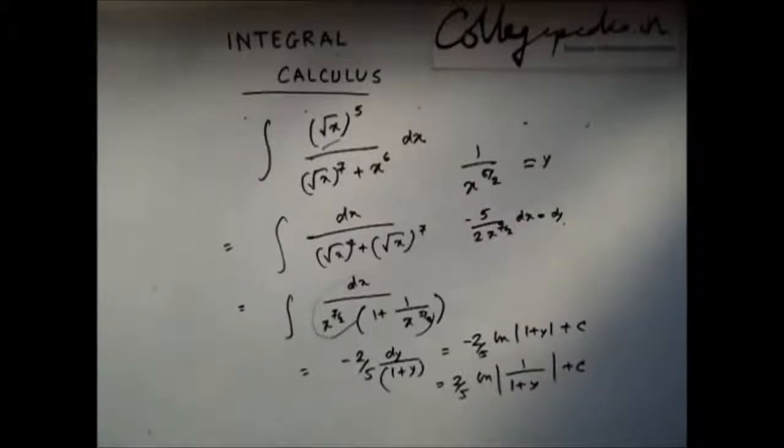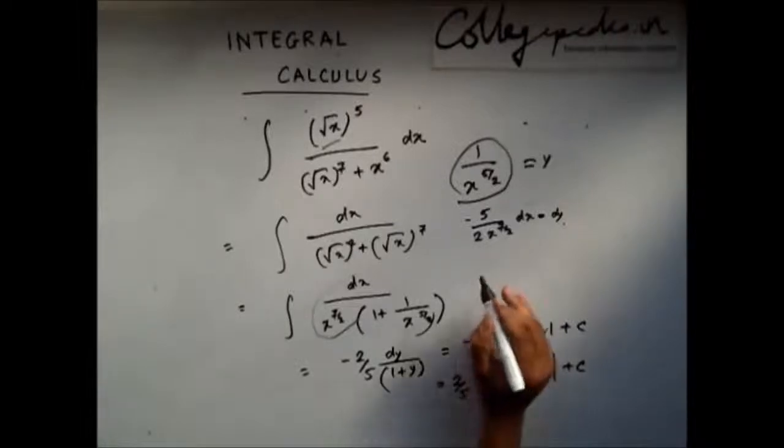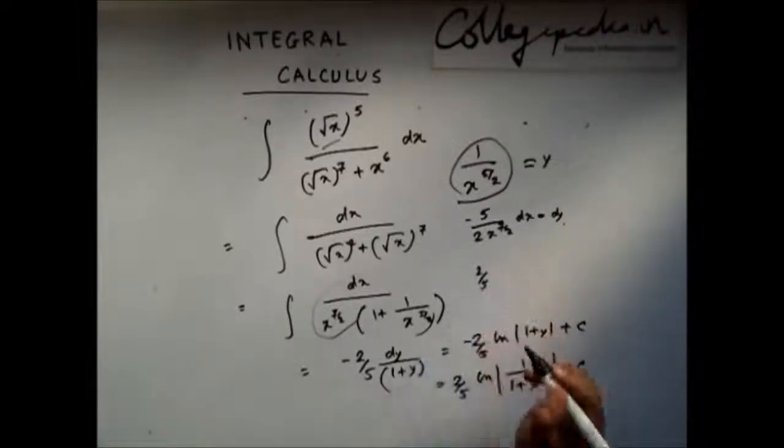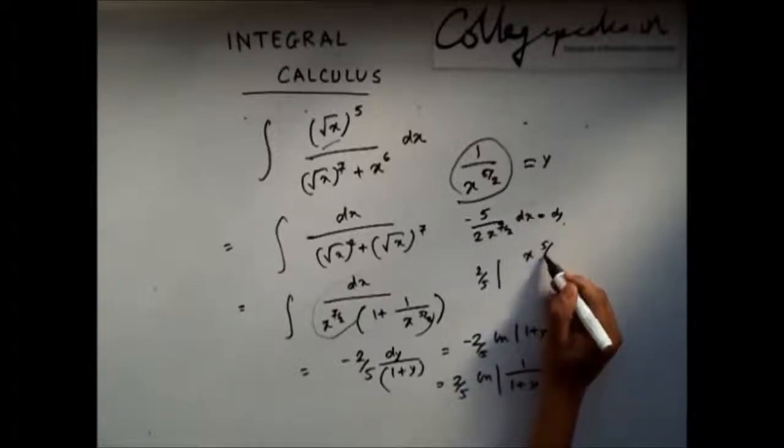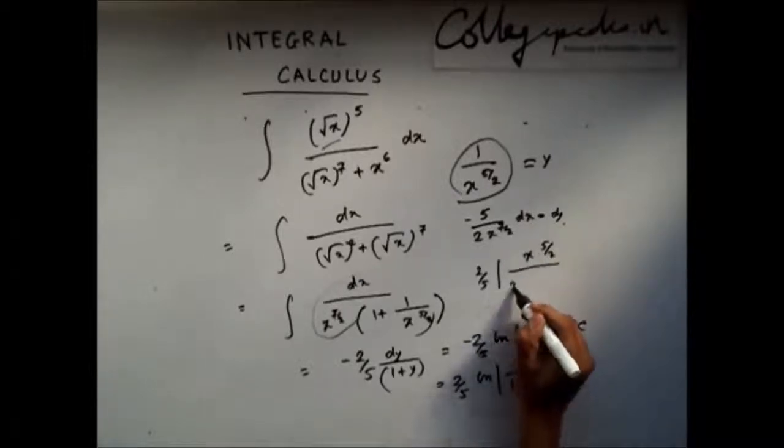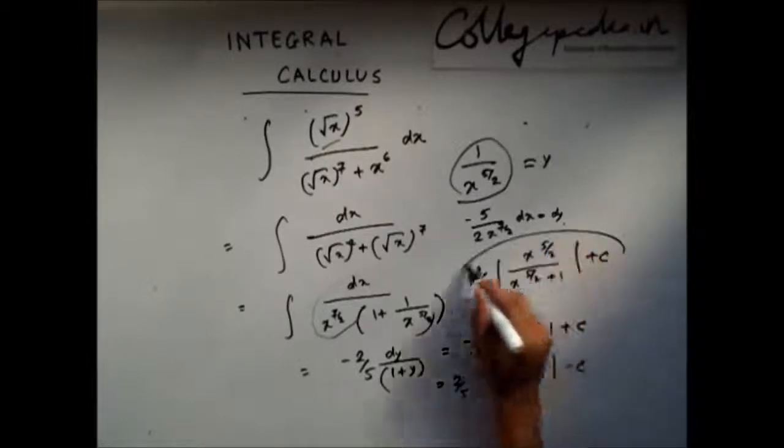Now to find the final answer what we need to do is replace y with 1 by x to the power 5 by 2. If you do that you will get the solution as 2 by 5 mod of x to the power 5 by 2 divided by x to the power 5 by 2 plus 1 plus c. This is my final answer.